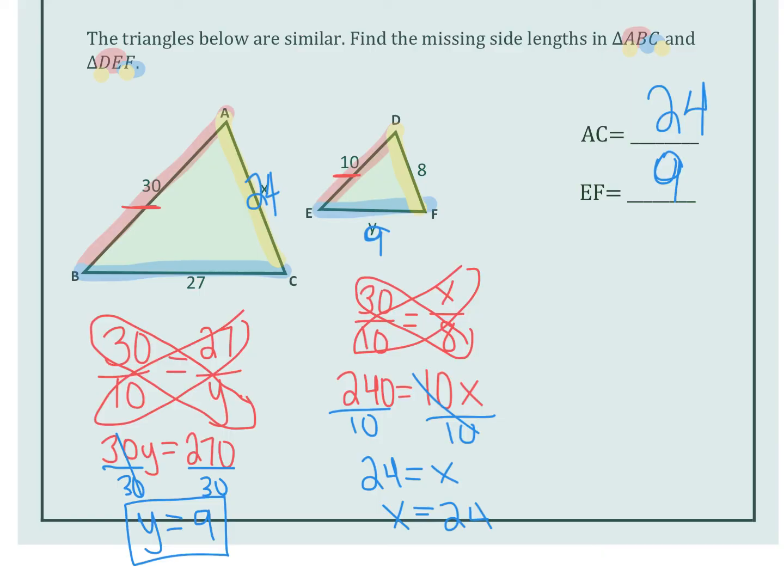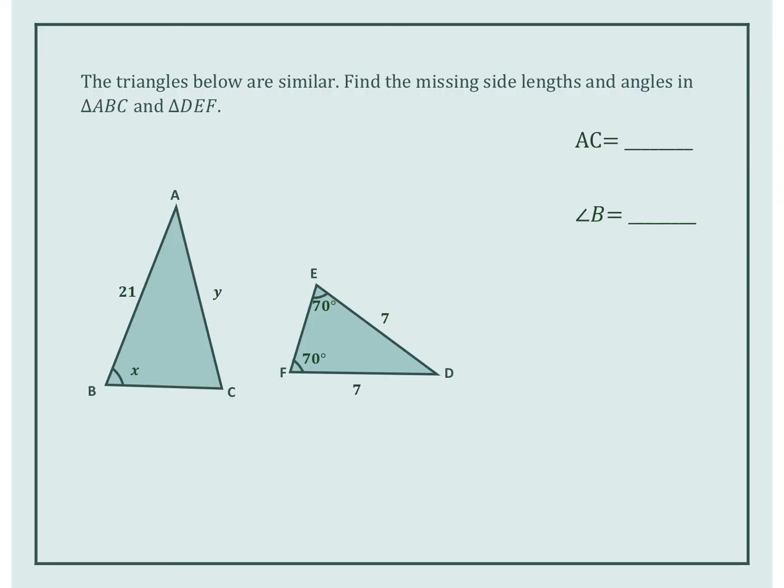Make sure you write this all down. Let's do it again. The triangles below are similar. Find the missing side length and angles in these two triangles.